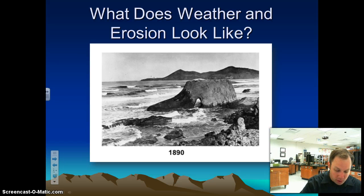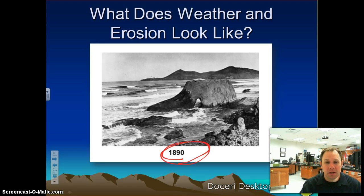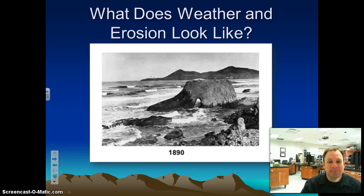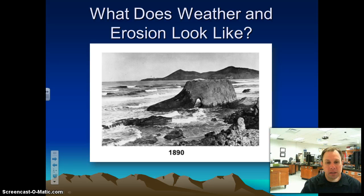Here I have a picture of a rock that's on the coast. This picture goes back to 1890, quite a long time ago. What we're going to look at is the progression of the weathering that occurs on this rock. Here we have 1890, and then we have the exact same rock in 1910. You can see a whole lot in just a 20-year time frame, the amount of weathering that's occurred.